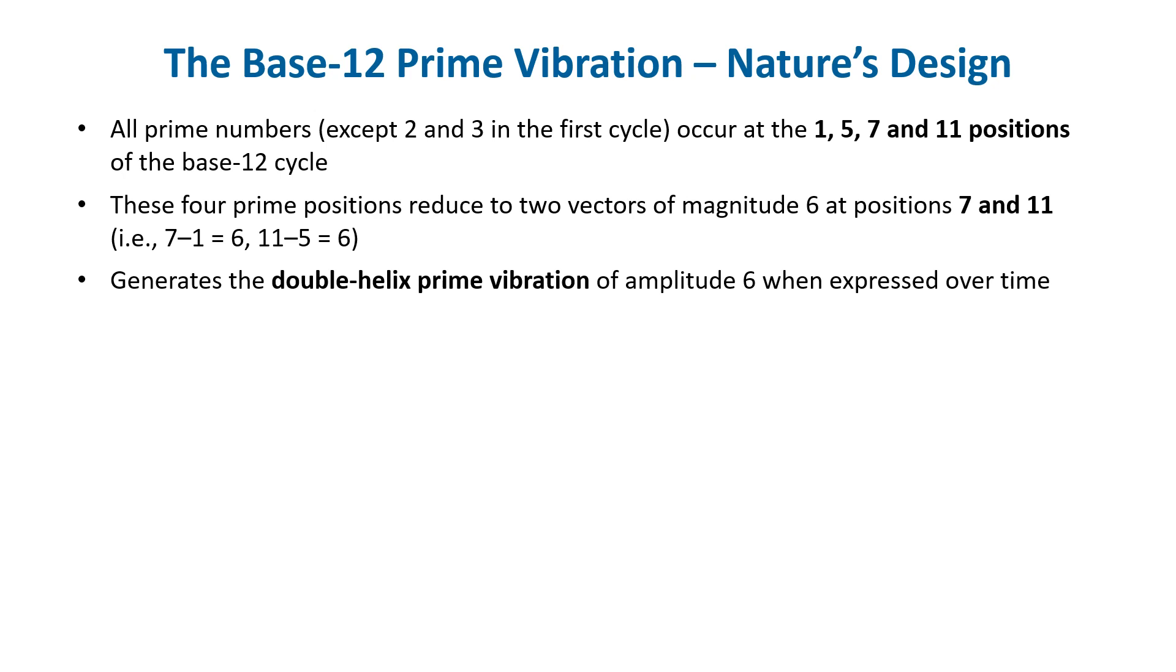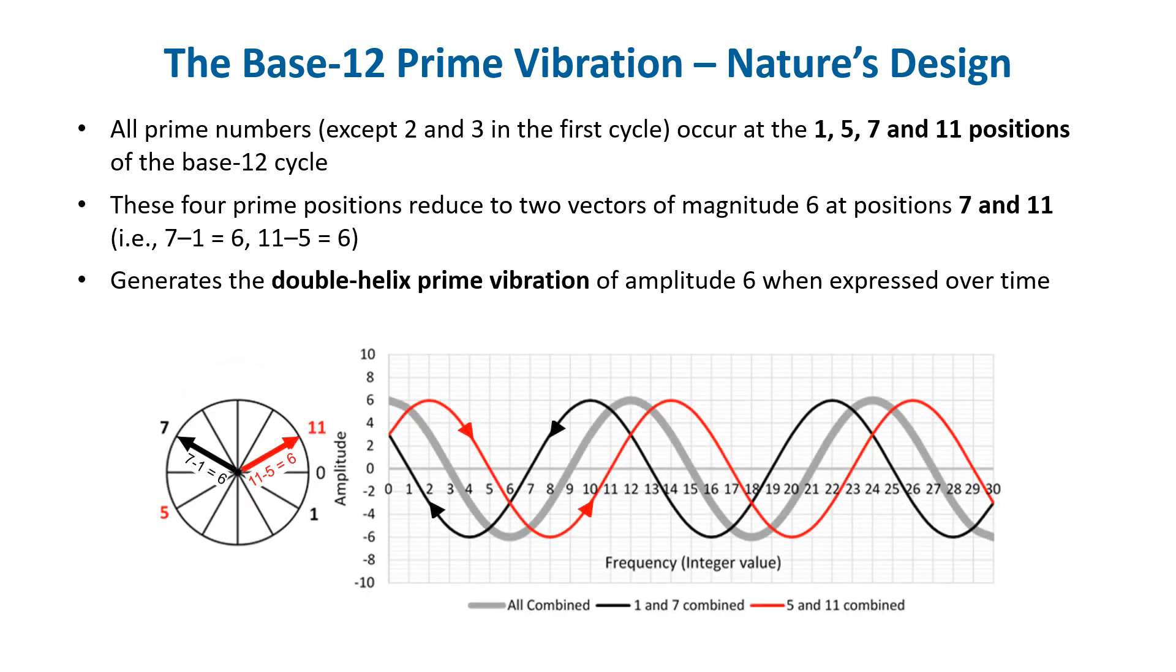These are at one, five, seven, and eleven. Note that this excludes positions two and three, as they only generate prime numbers in the first cycle. Still, there's an even simpler way of describing the base-12 cycle, as cycles of just two positions instead of four. Let me explain.